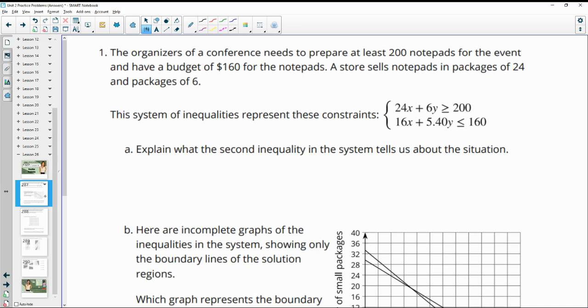Number one, the organizers of a conference need to prepare at least 200 notepads for an event and have a budget of $160. A store sells notepads in packages of 24 and packages of 6. This system of inequalities represents the constraints. Explain what the second inequality in the system tells us about the situation.